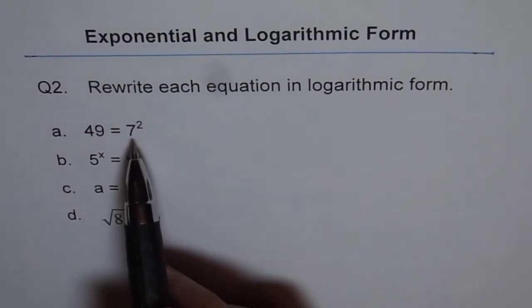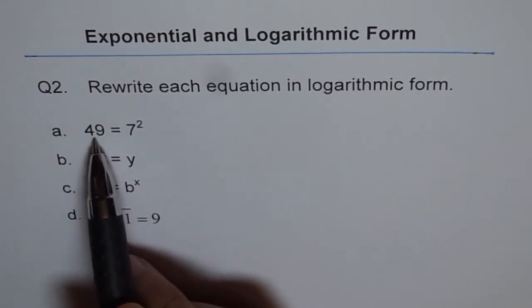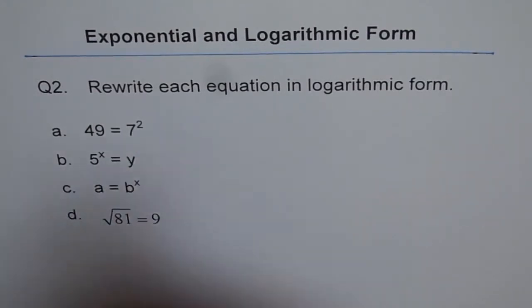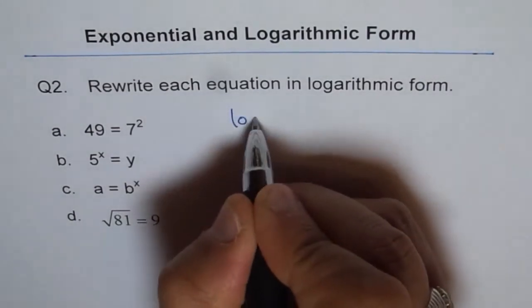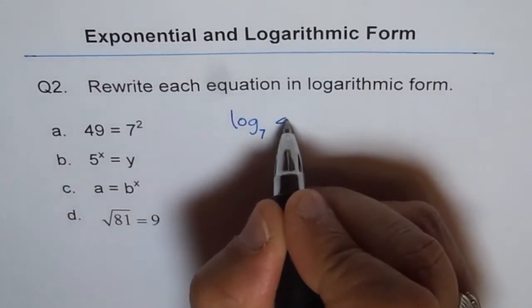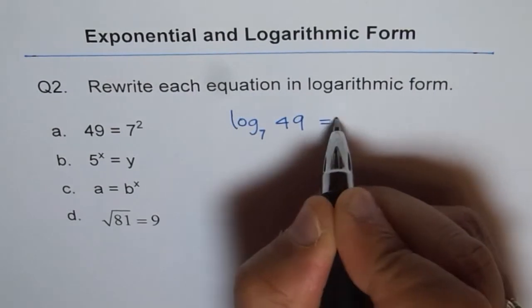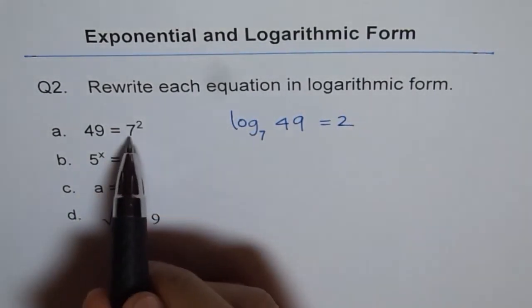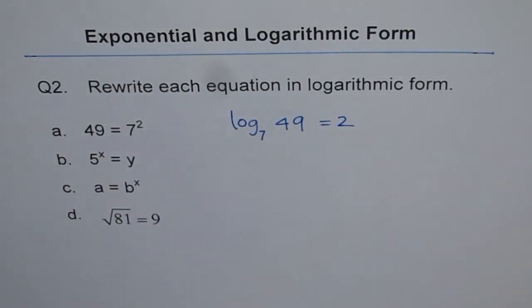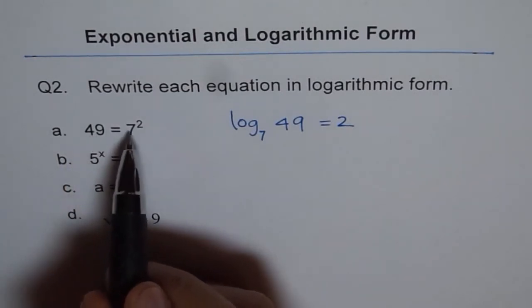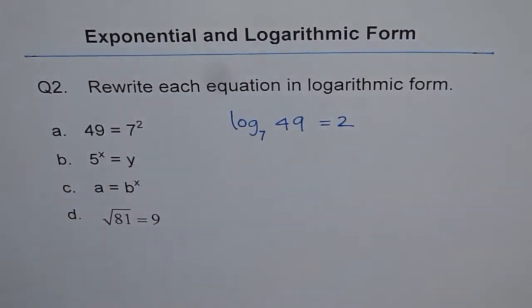Here we can write log to the base 7. Log to the base 7 of 49 is 2. That is how we will write this. We see log to the base 7 of 49 is equals to 2. That is our base of 49 is equals to 2.